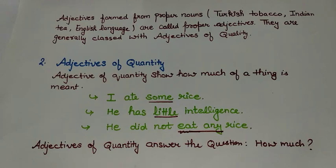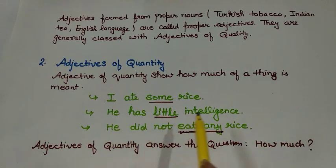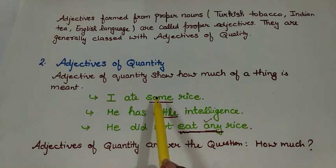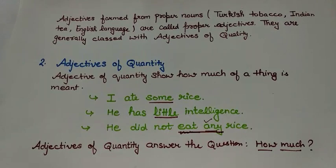Coming to the second adjective, that is adjective of quantity. As the name suggests, adjectives of quantity show how much of a thing is meant. Like, 'I ate some rice' — here 'some' is representing quantity. 'He has little intelligence.' 'He did not eat any rice.' The words 'some,' 'little,' and 'any' are showing a quantity, hence they are adjectives of quantity. To check, we can ask 'how much' — how much rice did I eat? I ate some rice.